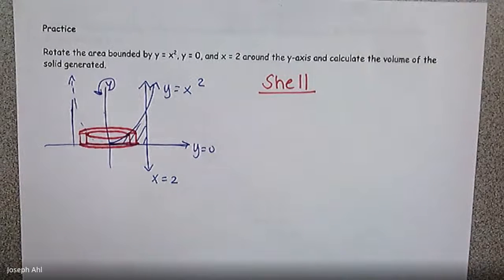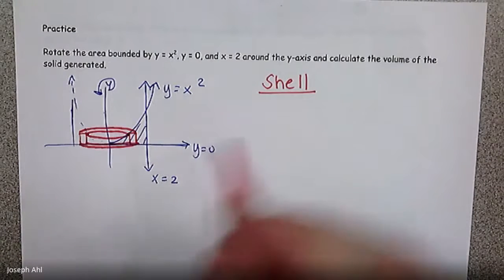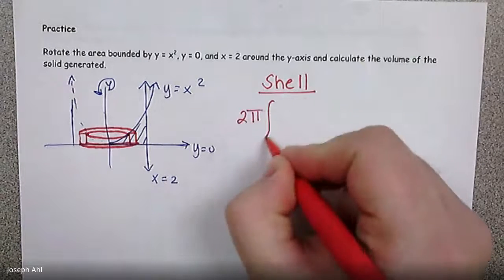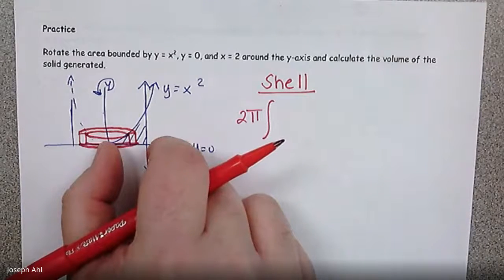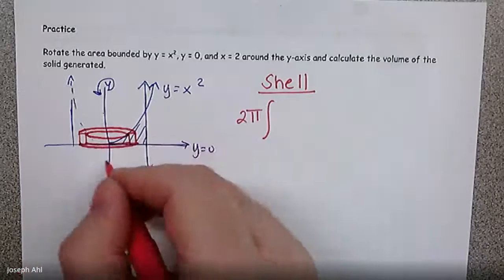So if we think about the circumference there, 2π, well the surface area, 2πRH, it's going to be 2π times. We're integrating with respect to x here. So we're going to wind up having from 0 to 2.